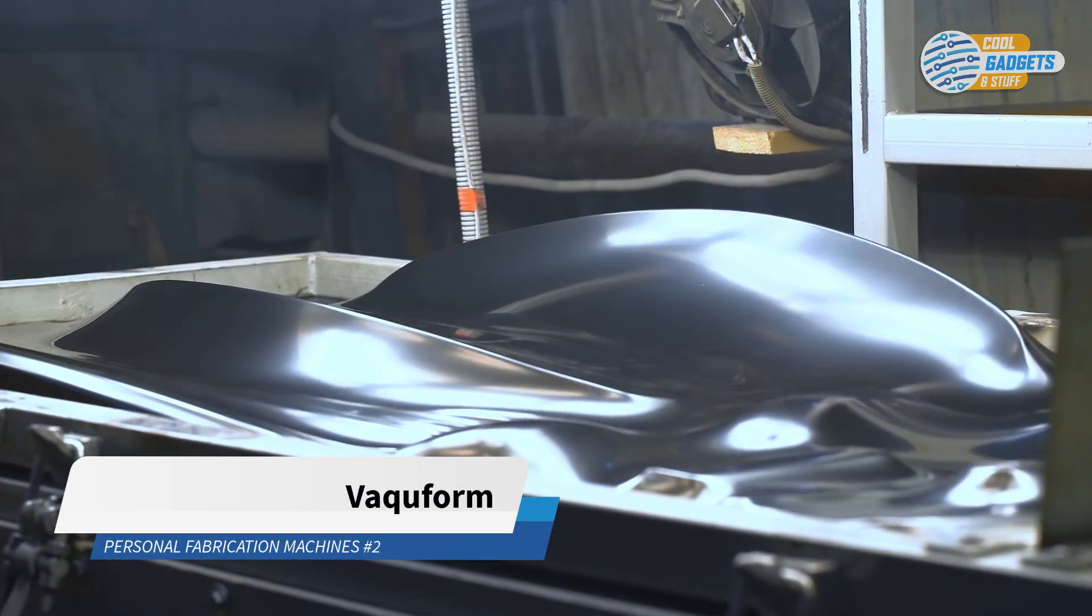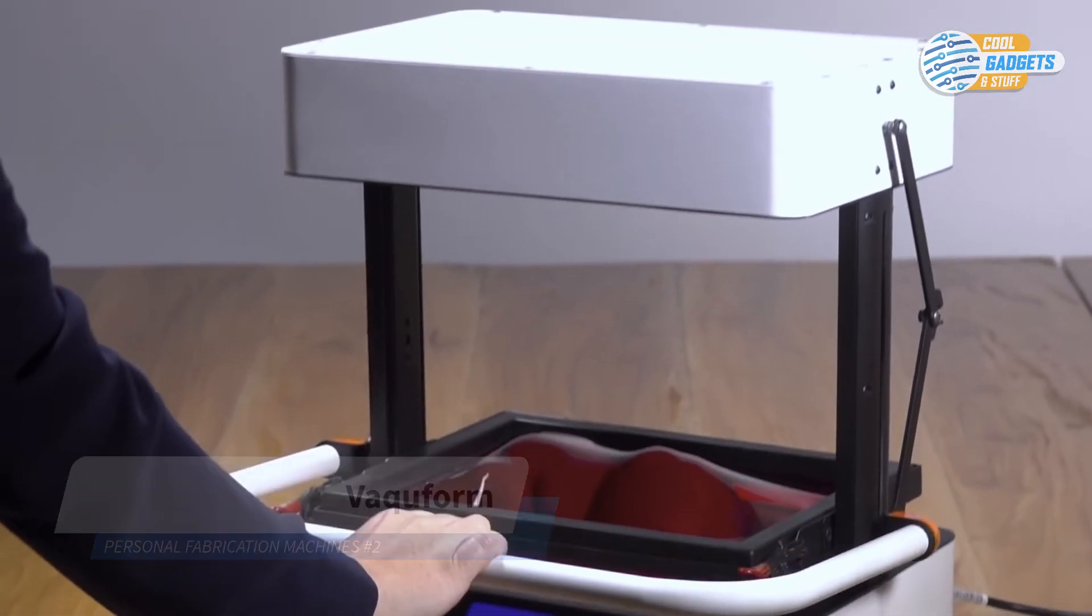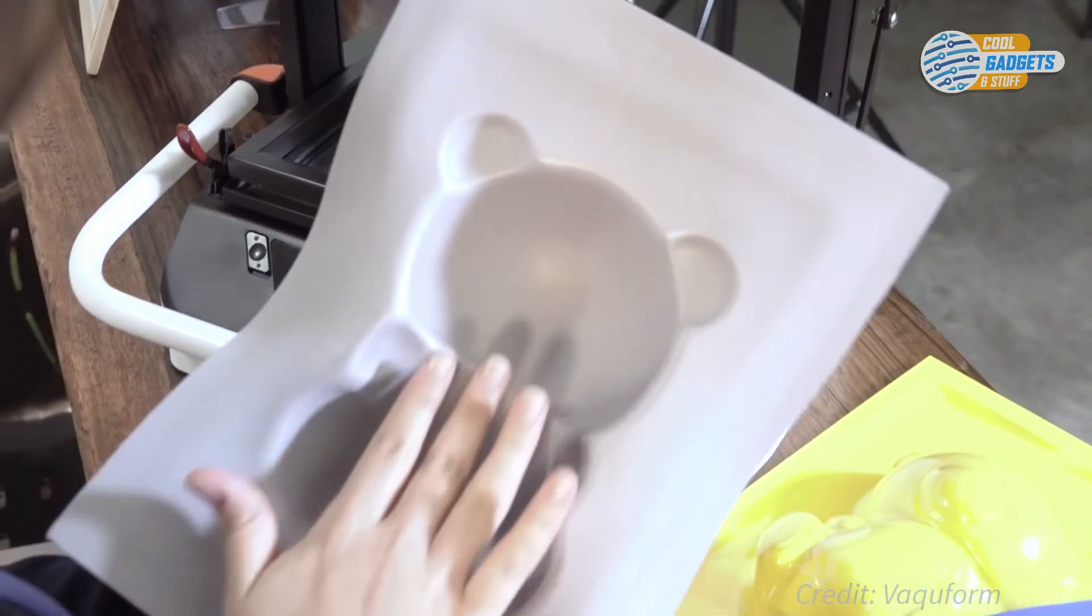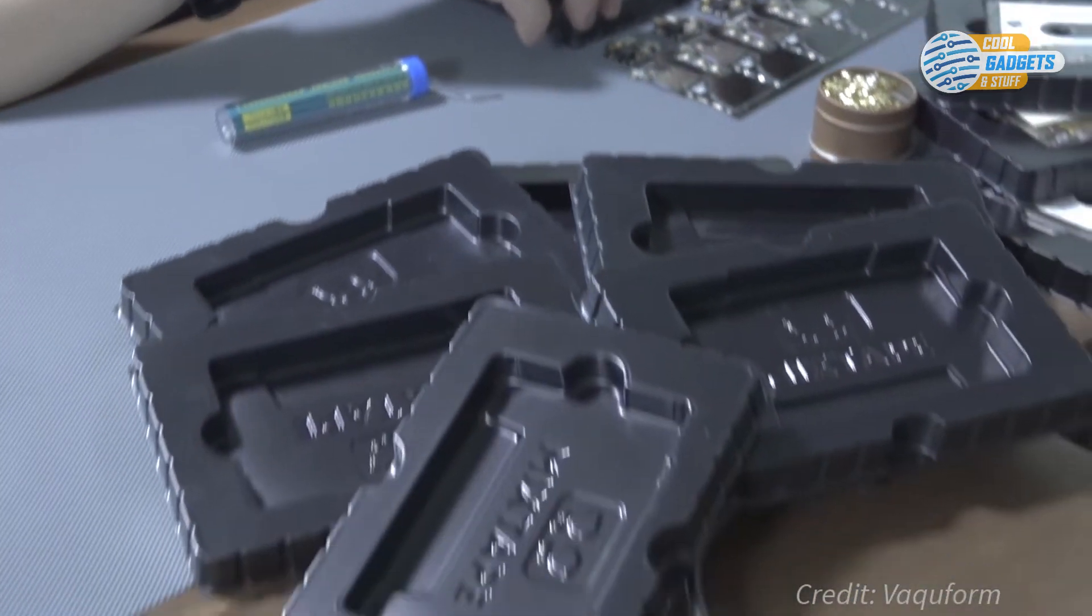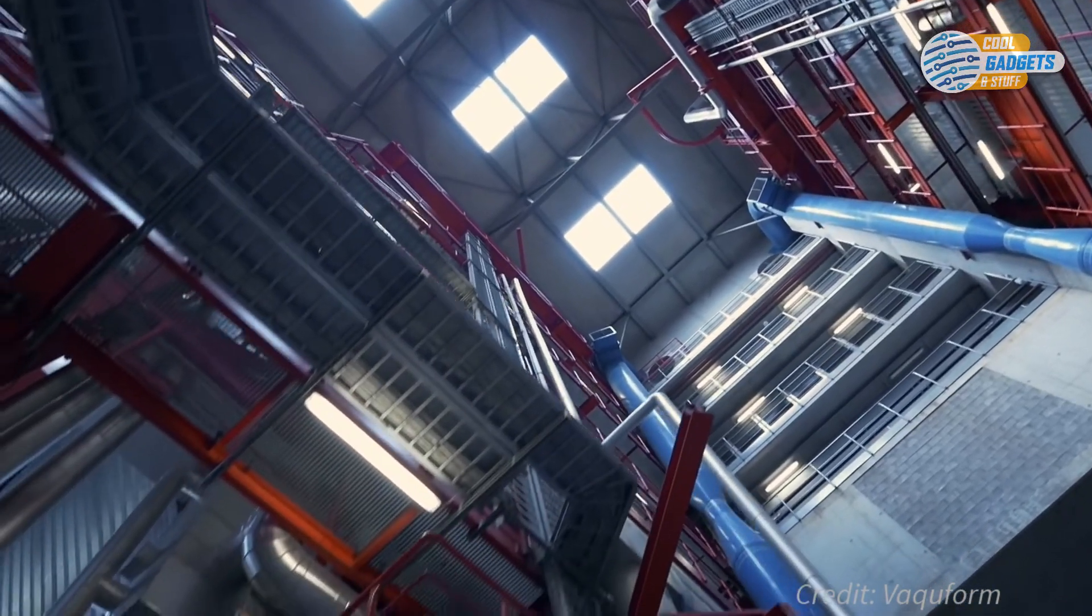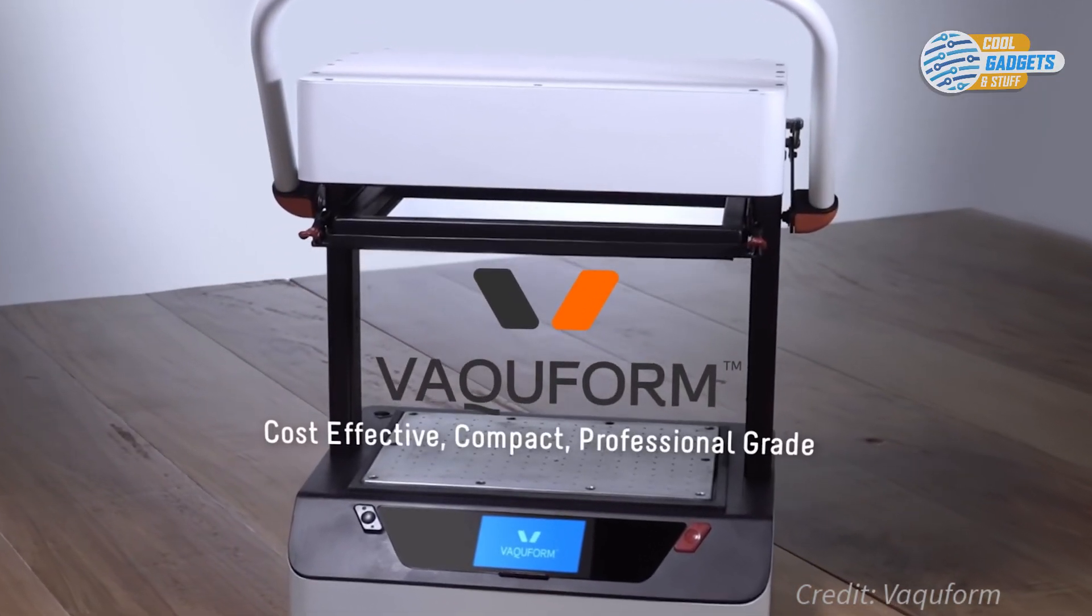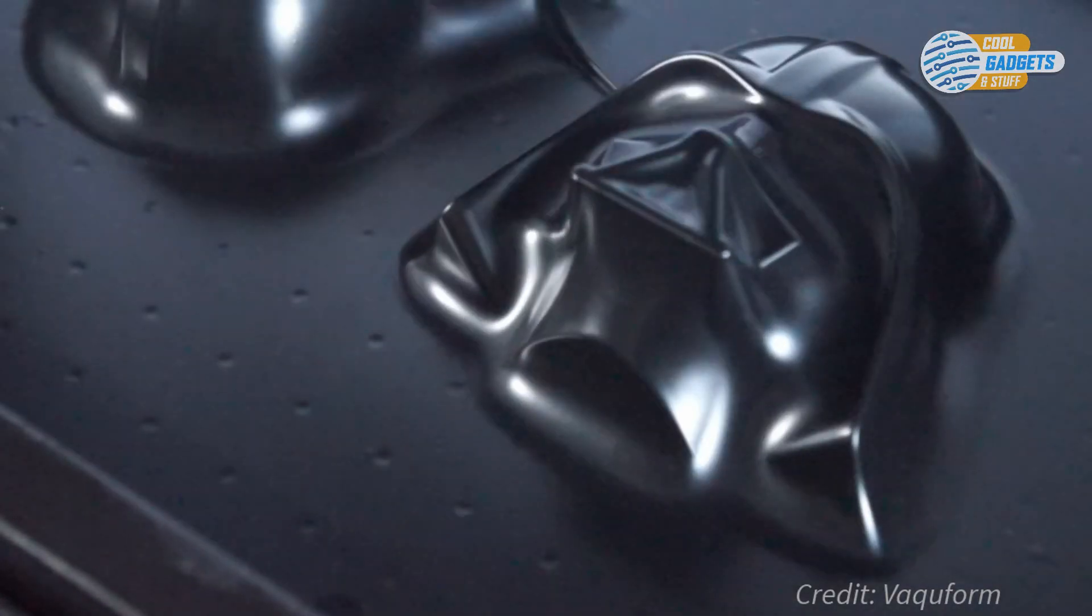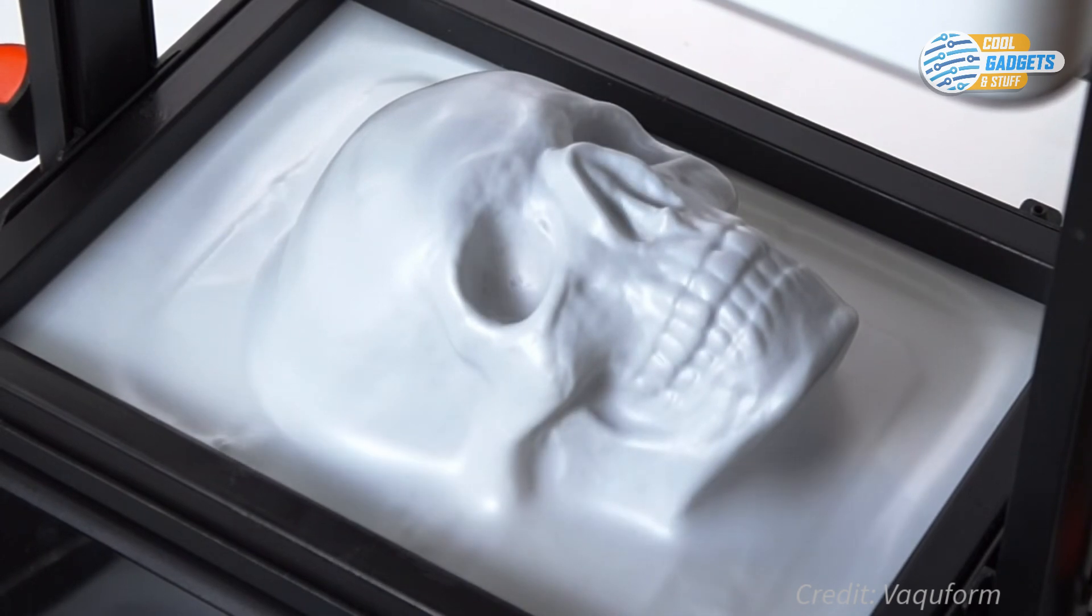Thermoforming is a manufacturing process where a plastic sheet is heated and pressed to form a specific shape that can be used as a mold, usable product, or packaging. Thermoforming is widely used across industries, but the machines are large and expensive. VacuForm is the first manually operated vacuum forming machine that can produce industrial grade plastic moldings while being compact enough to fit on a desktop.